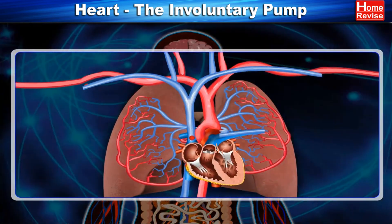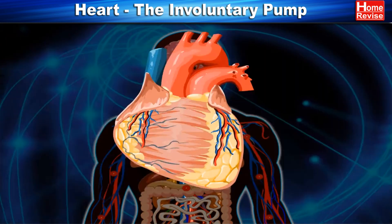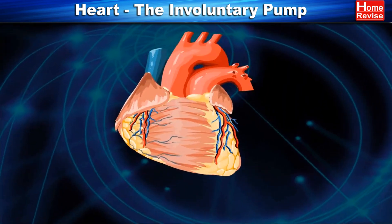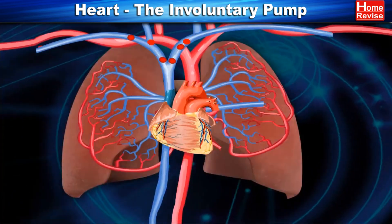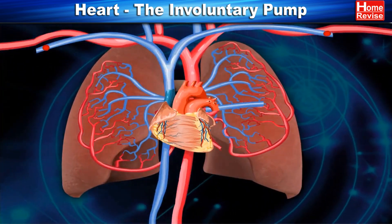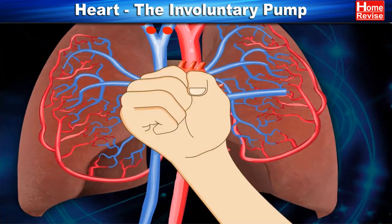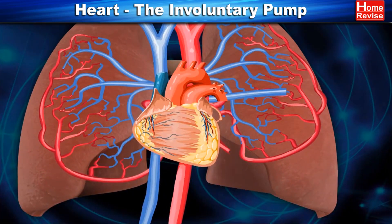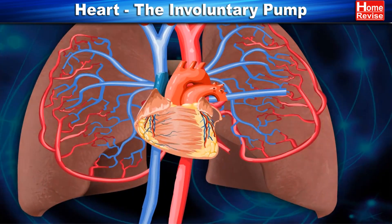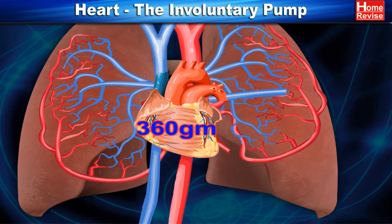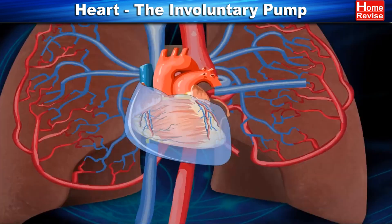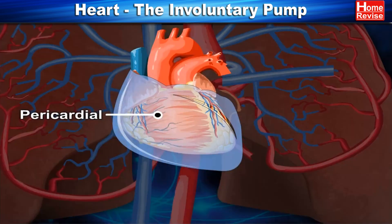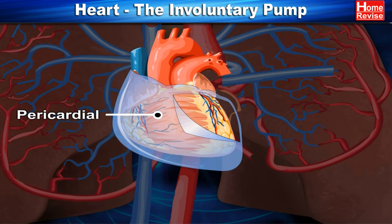The human heart is a muscular organ which pumps blood. It is the size of a human fist and weighs about 360 grams. The heart is covered by the pericardial membrane.